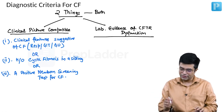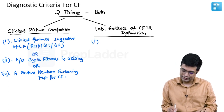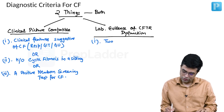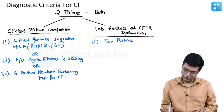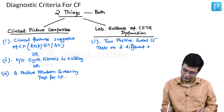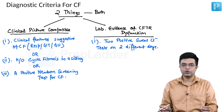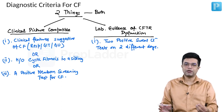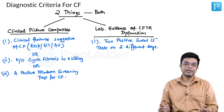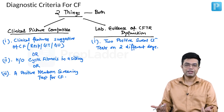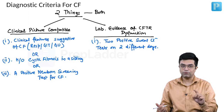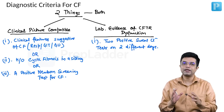On the other hand, for lab evidence of CFTR dysfunction, we also have three criteria. First, there should be two abnormal positive sweat chloride tests done on two different days. For older children and adults, the sweat chloride test is the screening test of choice — pilocarpine iontophoresis is performed, and if chloride in the sweat sample is more than 60 mEq/L, that is suggestive of CFTR dysfunction. Two positive tests on separate days fulfills this criteria.